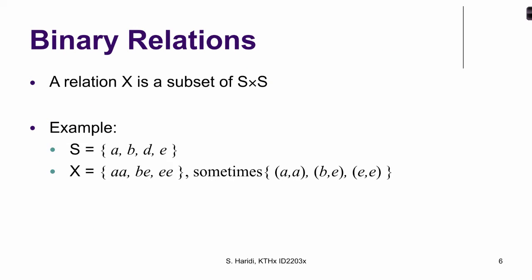Next, we talk about binary relations. So a binary relation, for example X, is a subset of the Cartesian product of the set with itself. So here's an example. We have the set A, B, C, and D. And the binary relation X consisting of the pair A, A, B, B, and E, E. Sometimes we write it like this, the pair A, A, B, B, E, E. This is a binary relation because it is a subset of the Cartesian product of the set S.